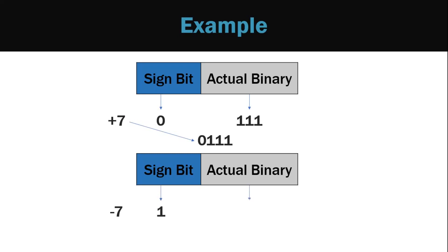Minus 7 will be represented as 1111 in sign magnitude form, since the sign bit is 1 and 7 in binary is 111.